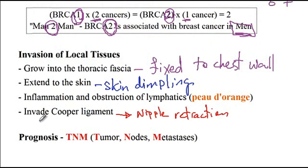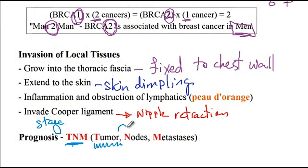In terms of staging, which tells the extent to which the tumor has spread, we use the TNM model. This tells you the characteristics of the tumor, whether there has been invasion of the axillary lymph nodes, and whether there has been invasion of distant sites.